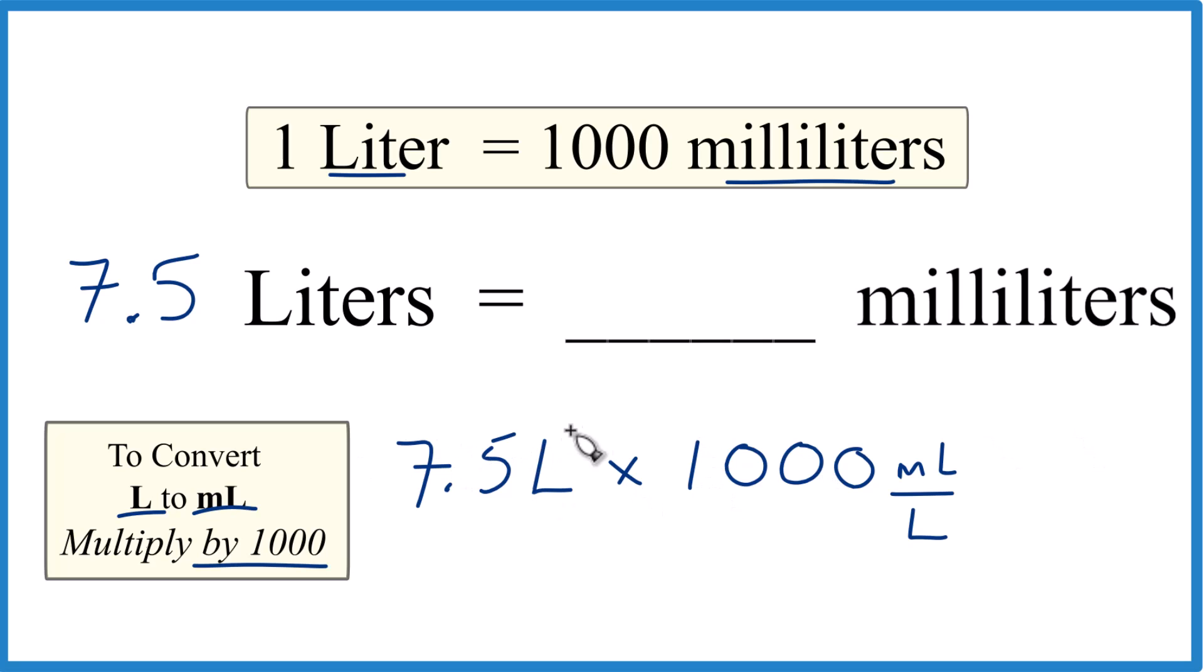So now we multiply liters on the top and the bottom. They cancel out, left with milliliters. That's what we're looking for.